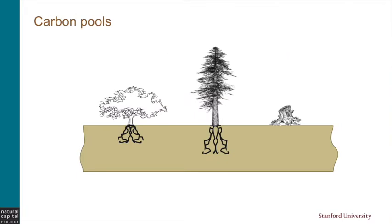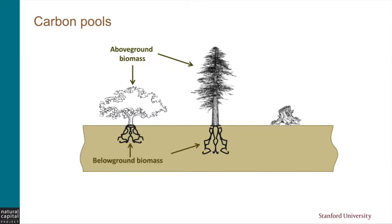The model estimates carbon stored in four carbon pools. The first is above-ground biomass, which comprises all living plant material above the soil — so bark, trunks, branches, and leaves. The second is below-ground biomass, which is the living root systems of the above-ground biomass — so all the roots.